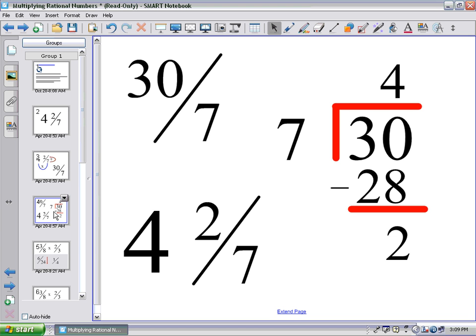So now, my improper fraction, which was 30 over 7, becomes 4 and 2 sevenths as my mixed fraction. This is how you convert a mixed number to an improper fraction, and then back an improper fraction to a mixed value.